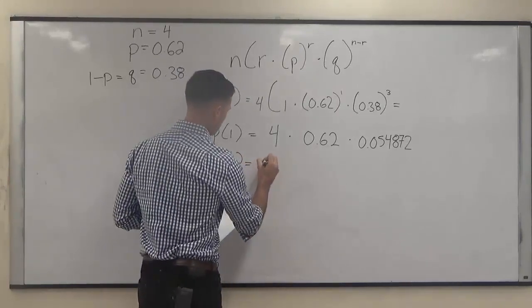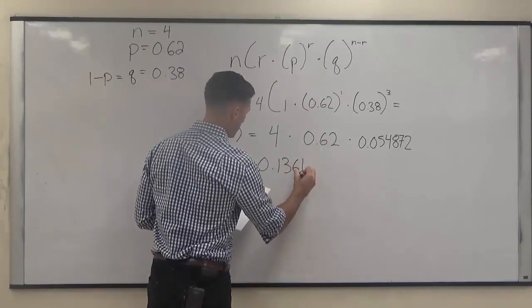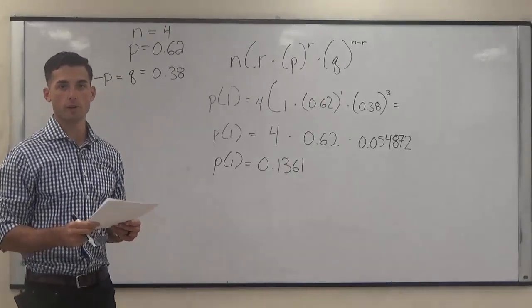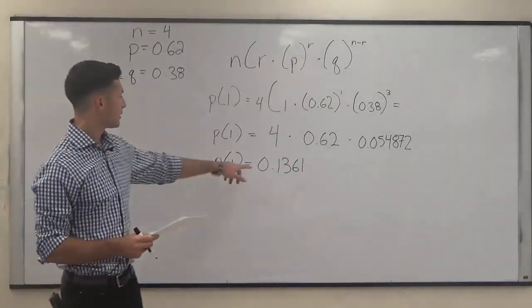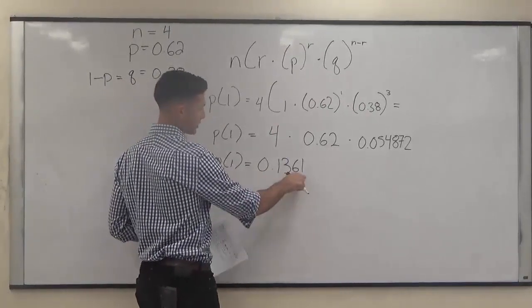you get 0.1361. So the probability that exactly one of these four women responds yes to this survey is 0.1361. This would be your final answer.